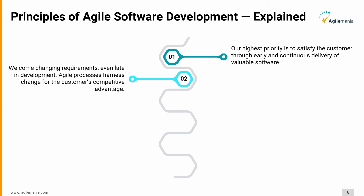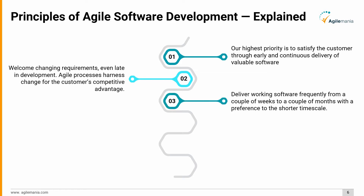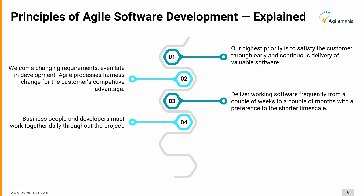The second principle: welcome changing requirements, even late in development. Agile processes harness change for the customer's competitive advantage. The third principle: deliver working software frequently, from a couple of weeks to a couple of months, with a preference to the shorter timescale. The fourth principle: business people and developers must work together daily throughout the project.